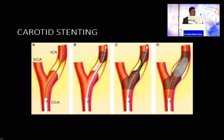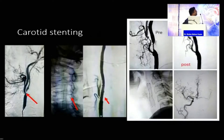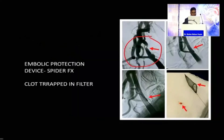Regarding carotid stenting: if there is occlusion at the origin of the ICA, it may cause hemodynamic stroke distally. This is a 53-year-old right-handed gentleman with recurrent TIA in the left MCA territory and tight ICA stenosis. I want to emphasize the use of a filter during carotid stenting. We entrapped the clot in the filter (the Spider filter). Had we not used this filter, it could have caused MCA stroke during the procedure. I have encountered three to four patients where the clot was trapped in the filter, out of around 30 patients.